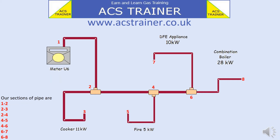We need to continue on in the same vein for the rest of the installation. Four to five is the tee to the fire. Four to six is the tee to the next tee. Six to seven is the tee to the DFE appliance, and six to eight is the tee to the combi. All the sections should be listed to keep track of the pipe sizes required.